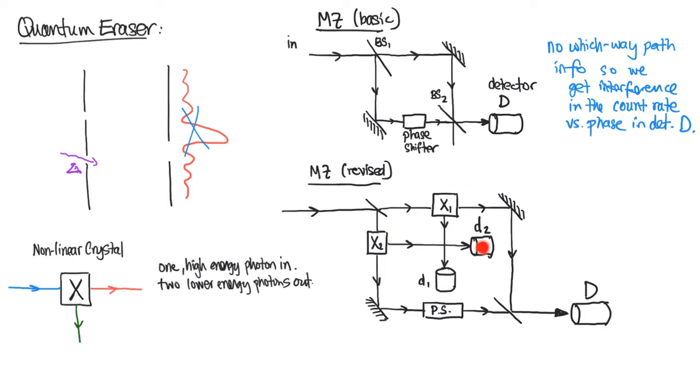So a count at the main detector big D will be accompanied by a click at detectors d1 or d2 and based on which of these two small d detectors clicked we'll be able to determine which path was taken. And as a result we will have which way path information so we will not have an interference pattern. Here again we have which way path information so we lose the interference pattern.